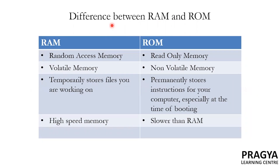Now let's take a quick recap on the differences between RAM and ROM. RAM stands for Random Access Memory while ROM stands for Read-Only Memory. RAM is a volatile memory while ROM is a non-volatile memory. RAM temporarily stores files you are working on, and anything stored in RAM is accessible and can be changed. At the same time, ROM permanently stores instructions for your computer, especially at the time of booting, and information stored in ROM cannot be changed or altered.